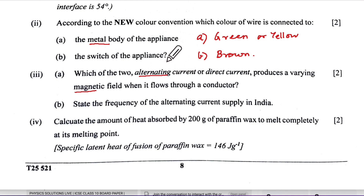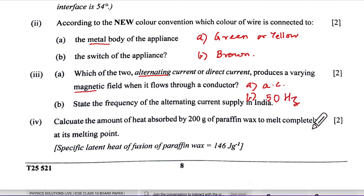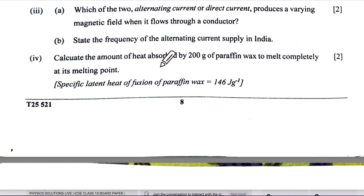Third part: which of the two — alternating current or direct current — produces a varying magnetic field? Alternating current varies from maximum to minimum, while direct current maintains the same EMF throughout. So for part a, the answer is alternating current. Part b: the frequency of AC in India is 50 Hz and the PD is 220 volts; the answer asked is frequency — 50 Hz.